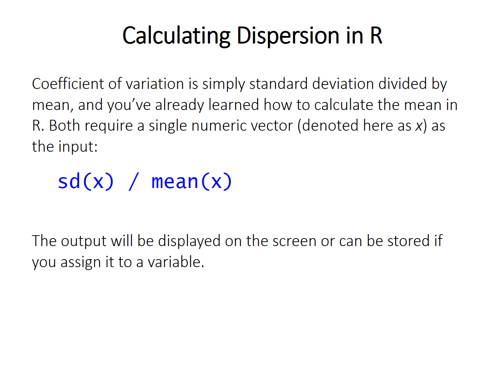I don't know of a built-in function to do coefficient of variation in the base version of R at least, but it's not really necessary. It's just standard deviation divided by mean. You know both those functions, so you can calculate it pretty easily. The output of this and any function will be displayed to the screen if you just type this, or you can assign it and store it as a variable.